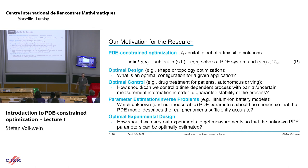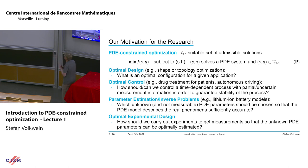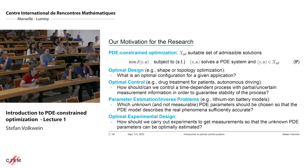One application is optimal design: what is the optimal configuration for a given application, usually in topology or shape optimization. For example, to reduce CO2 emissions — what is the best we should do? The other one is optimal control theory: how should we control a time-dependent process with partial, uncertain measurements and information, in order to ensure stability of the system. This is also motivated by engineering applications.